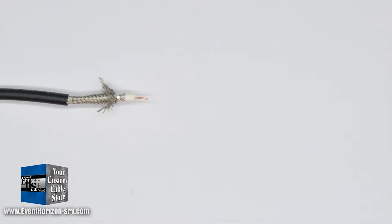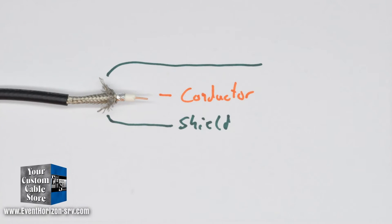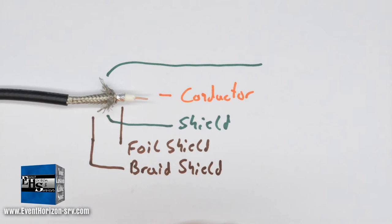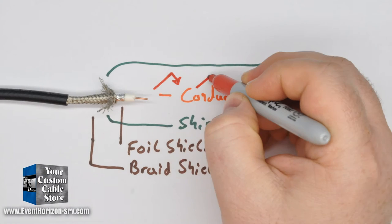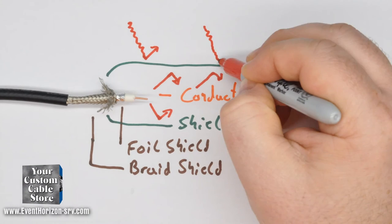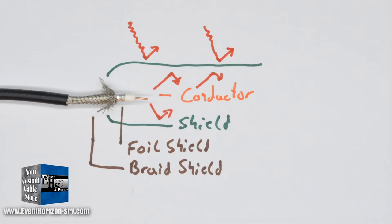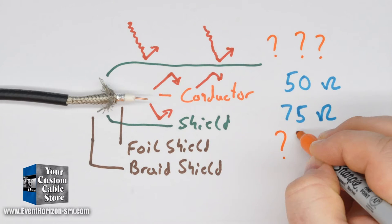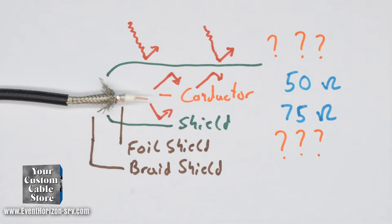Coax cable consists of a center conductor that is surrounded by a shield. They normally have multiple shields layered together. This is as much to keep the signal in as it is to keep the noise out. The common forms of these cables will have a characteristic impedance of 50 ohms or 75 ohms.